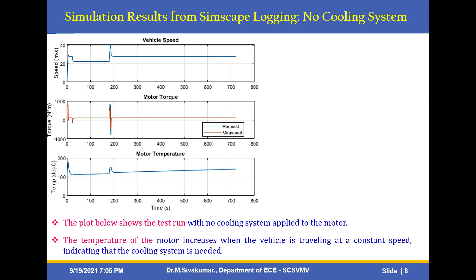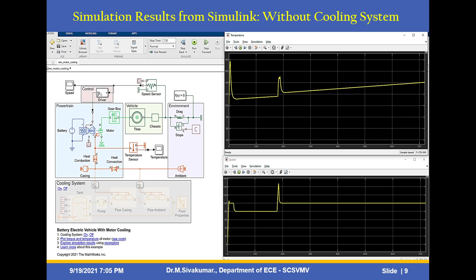Without the cooling system, the temperature gradually increases. The plot shows the test without the cooling system applied to the motor — the temperature of the motor increases when the vehicle is traveling at a constant speed, indicating the cooling system is needed. The same simulation result from Simulink without the cooling system shows temperature gradually increasing, so we need to incorporate the cooling system circuit. The block shows the powertrain block, vehicle subsystem block, system block, and cooling system block having the tank with fluid, pipe casing, and pipe ambient temperature.